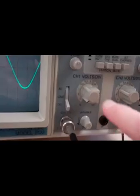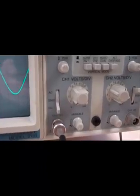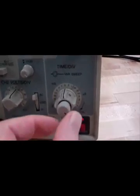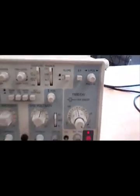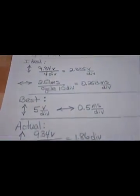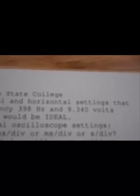5 volts per division is accomplished on this knob provided that the variable knob is turned fully counterclockwise. And the 0.5 milliseconds per division is accomplished on this knob provided that the cal knob is turned fully clockwise and the x position times 10 button is not pulled out. Those are the best settings for the oscilloscope to achieve the desired 9 volt amplitude and 398 hertz signal.